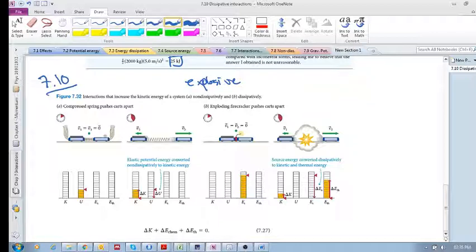The first one we'll consider is we compress the two carts with a spring. The initial velocities are zero, we let go, and the spring expands and pushes the carts apart. So just before we even look down, try to practice what kinds of energies are involved here.